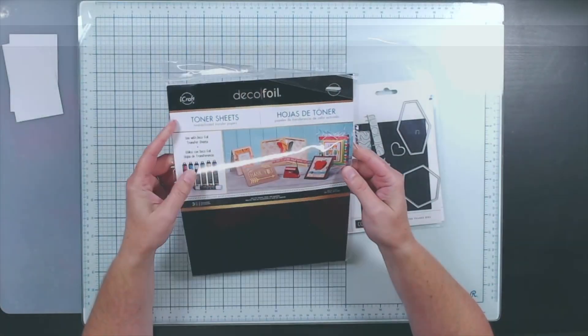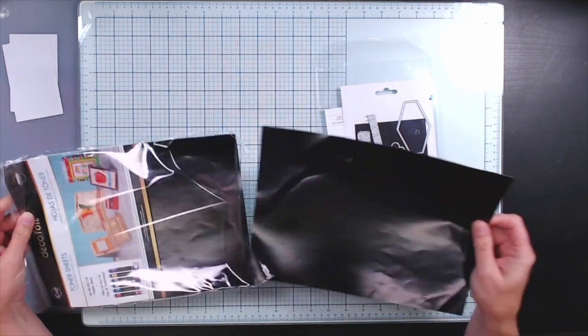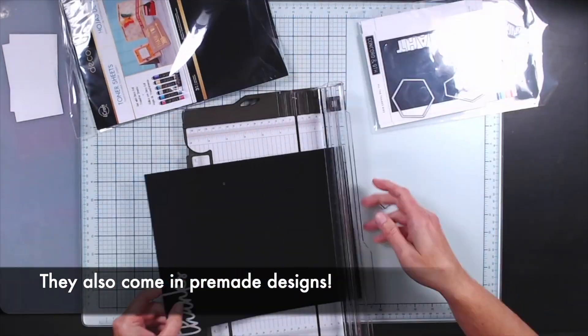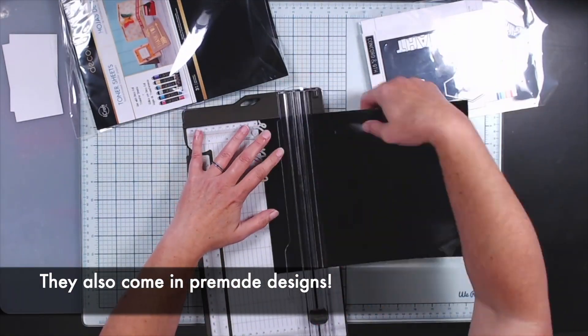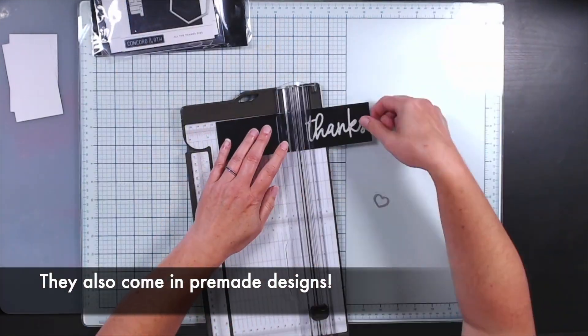Up next we're going to play with toner sheets. Now this really is a specialty product, but I tell you it is still way cheaper than owning any kind of foiling machine. So the sheets are made with printer toner and it's adhered to a backer cardstock piece, and you can just use it as is.